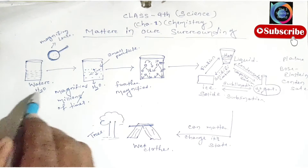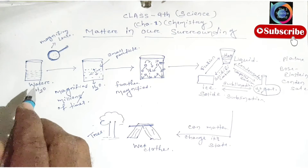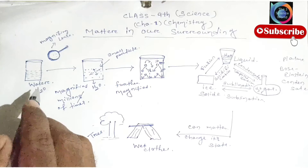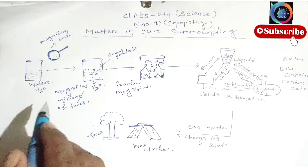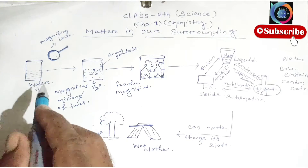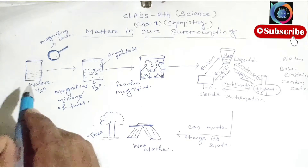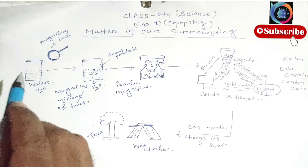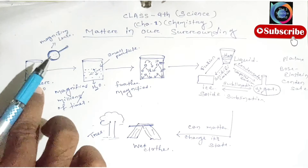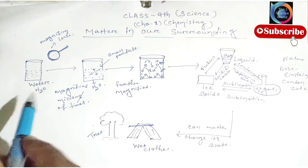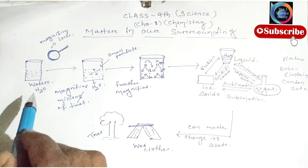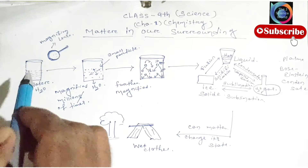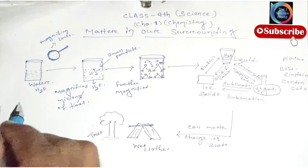For example, we take water. Water is a matter. What is matter? Anything that has mass and occupies space is called matter. So, for example, we will take water as a matter.